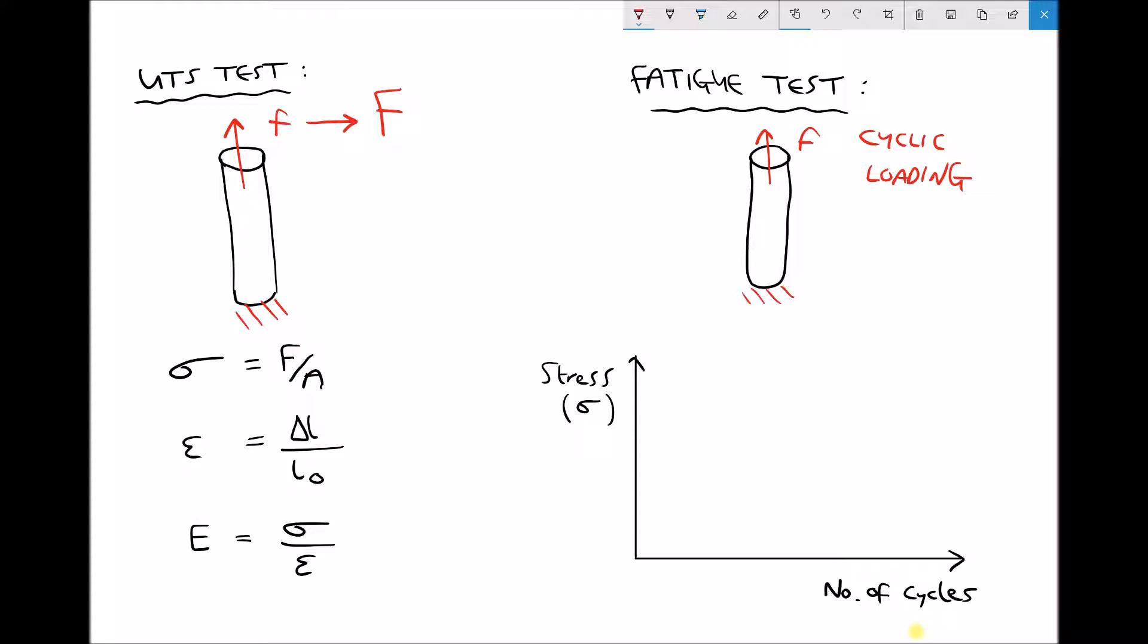So the way that this test would be conducted is the magnitude of the applied force would be specified and the magnitude of the applied force would be the same for each cycle. From that force we could determine the amplitude of the cyclic stress because we know that stress is force over area. So we would have a known applied stress and we would load and unload that sample until it failed.